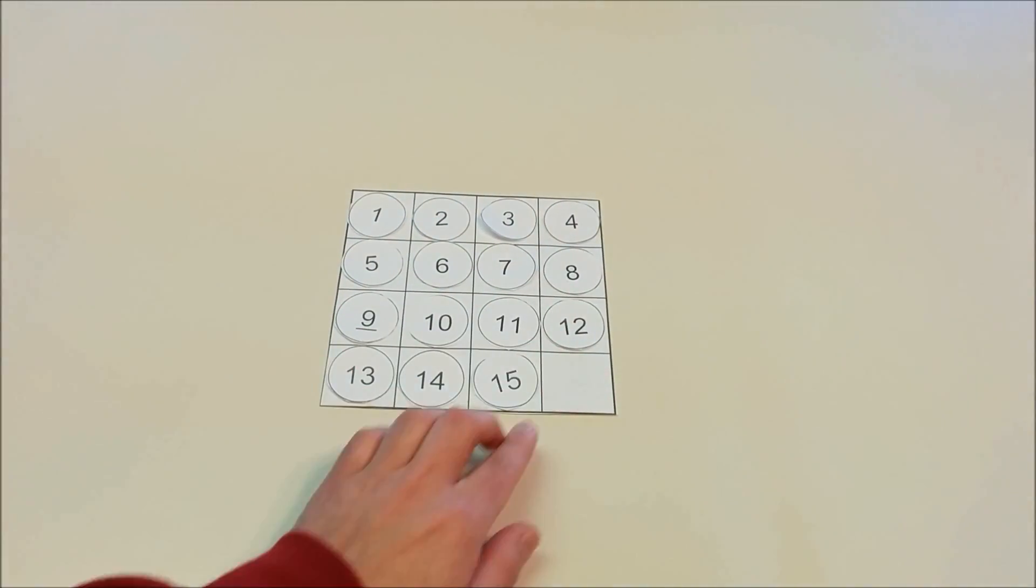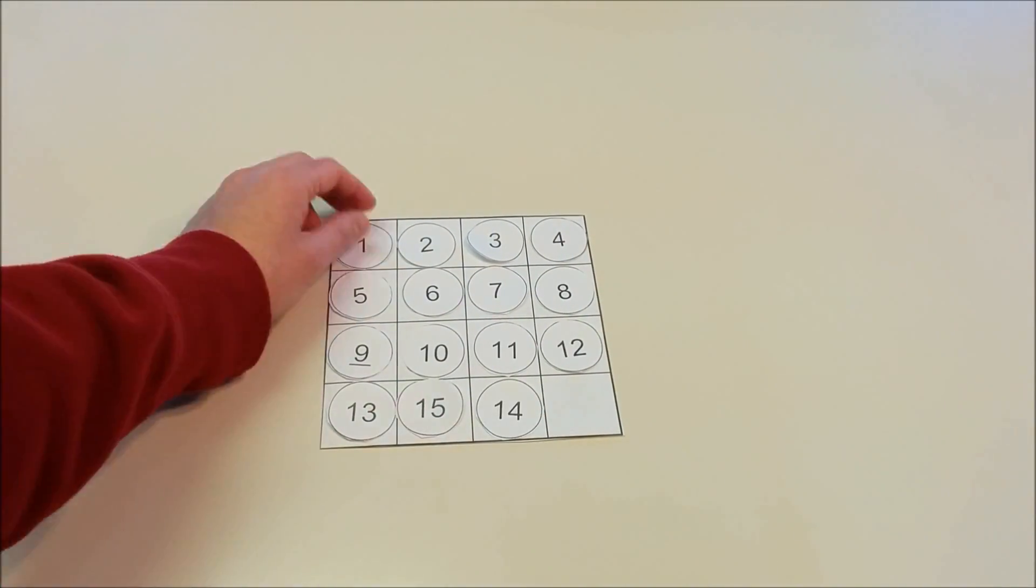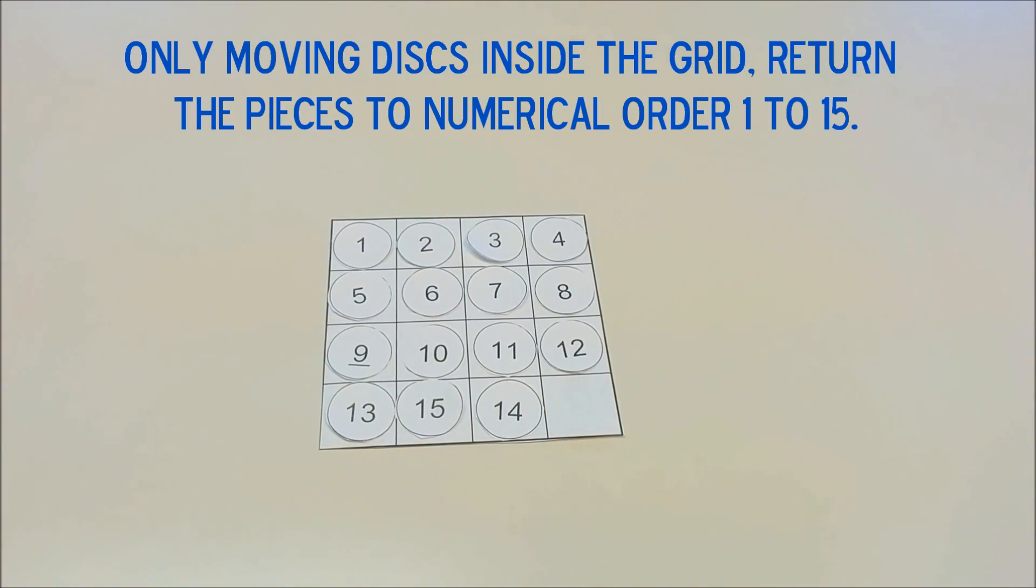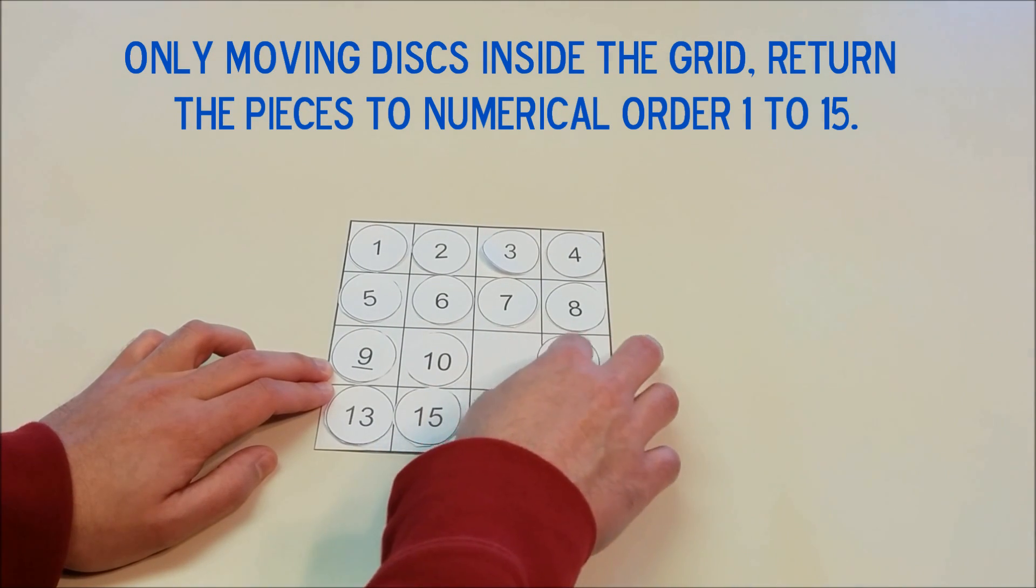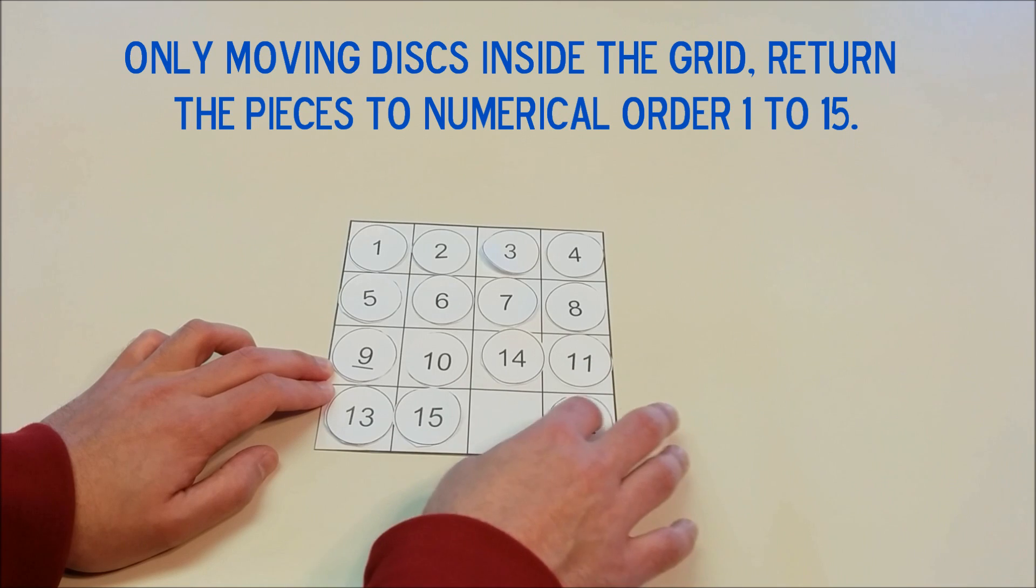So here's what they look like on the board. We have 1 through 15. We then flip 14 and 15. The puzzle is only moving disks inside the grid. You need to return the pieces back into numerical order 1 through 15.